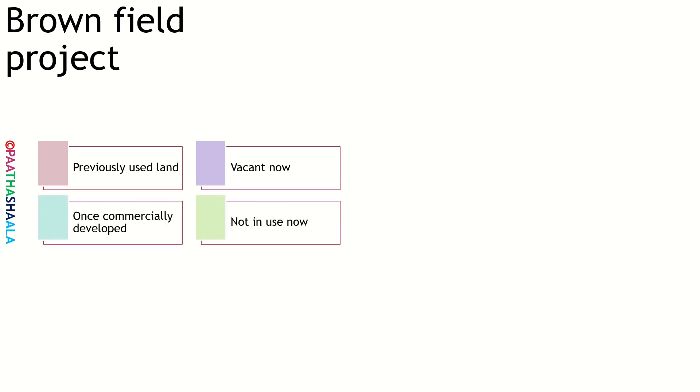What is a brownfield project? Brownfield means land that has been used previously but is now vacant or unused. A brownfield project was once a commercially developed project but is currently not in use for any purpose. A project that requires demolishing, remodeling or upgrading an existing or older project is known as a brownfield project.